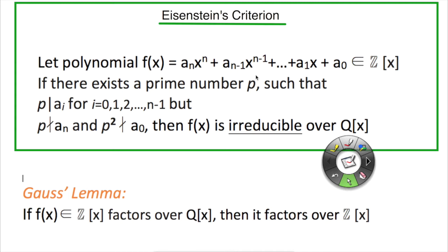And this criterion is actually based on Gauss' Lemma that states if f(x) polynomial in the integer ring is reducible over the rational ring, then it's also reducible over the integer ring.